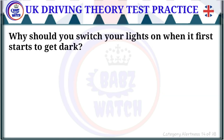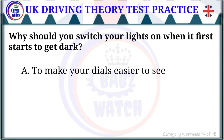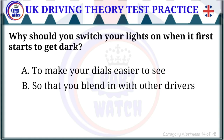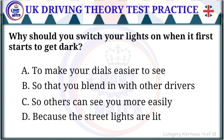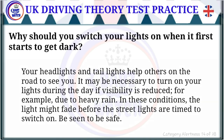Question 14 of 28: Why should you switch your lights on when it first starts to get dark? The correct answer is: so others can see you more easily. Your headlights and tail lights help others on the road to see you. It may be necessary to turn on your lights during the day if visibility is reduced — for example due to heavy rain. Be seen to be safe.